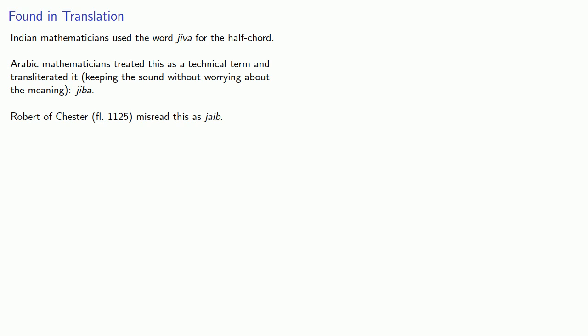He could have done the same thing that the Arabic mathematicians did and treated this as a technical term and transliterated it as jaib, which would have at least retained the etymological connection to the half chord. But rather than treating it as a technical term, he translated it. This word jaib in Arabic means bay, and in Latin, this is sinus. And the complement of the sine is the cosinus.